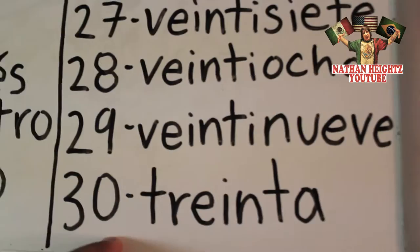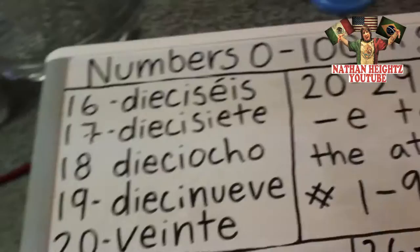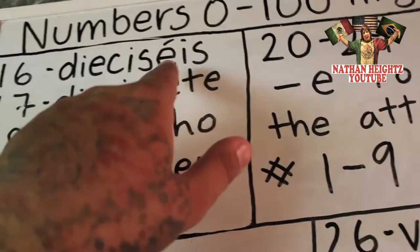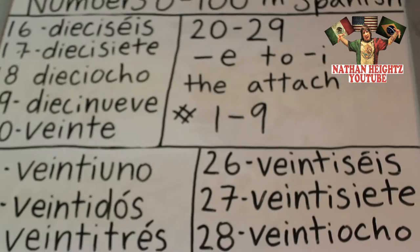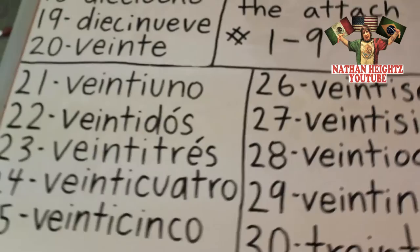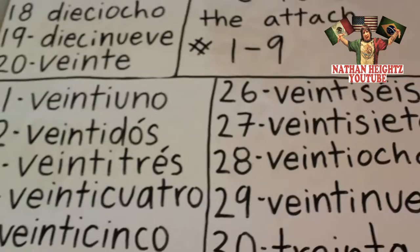One quick little note: you definitely want to pay attention in the written form to the letters that have accent marks on top of them. So we have 16, 22, 23, and 26. Those accent marks are put in to keep the original accent in 6, 2, 3 — they're completely necessary in the written form.